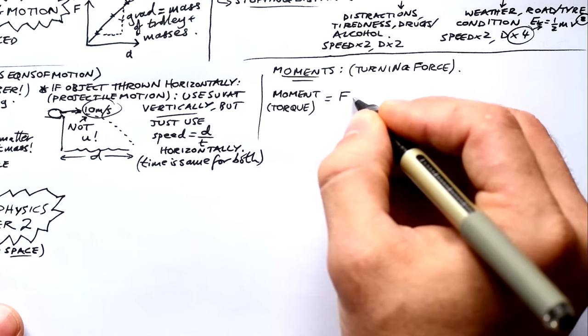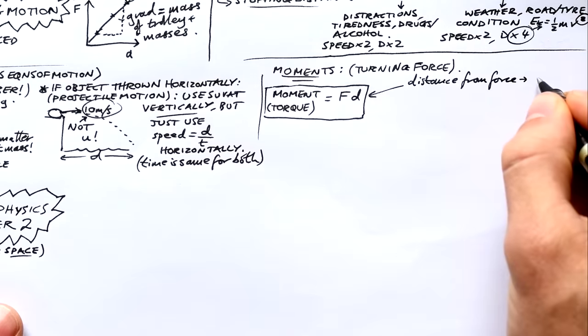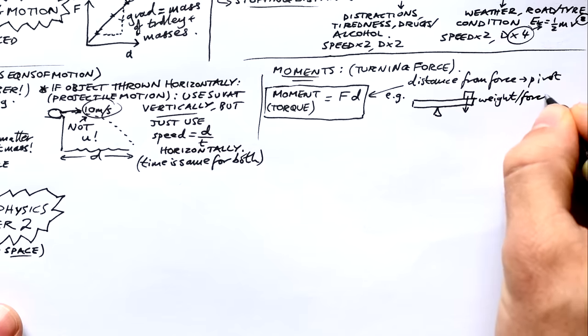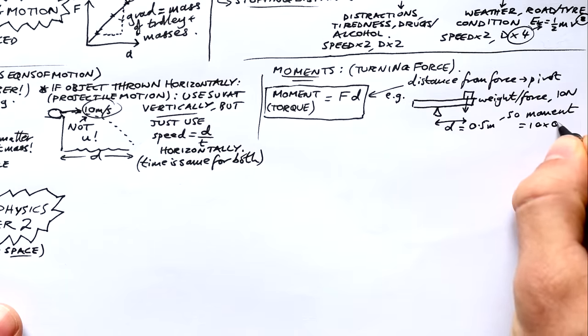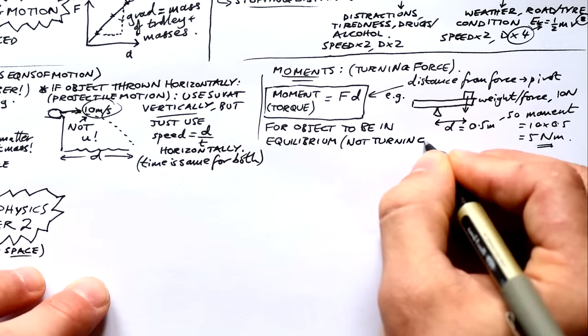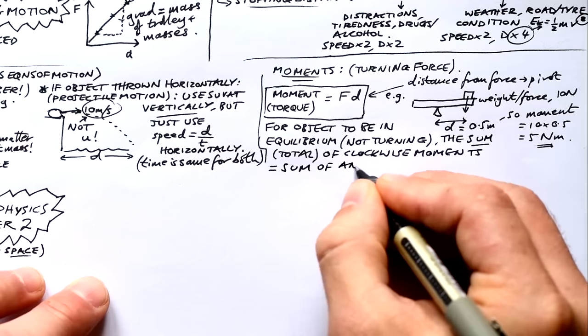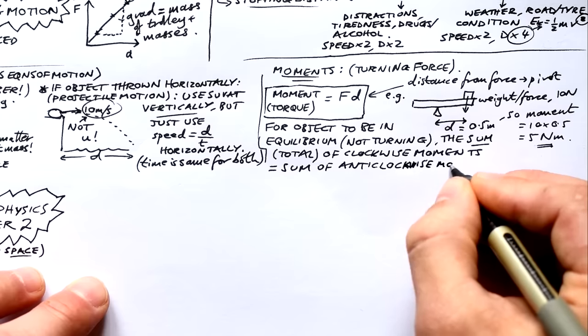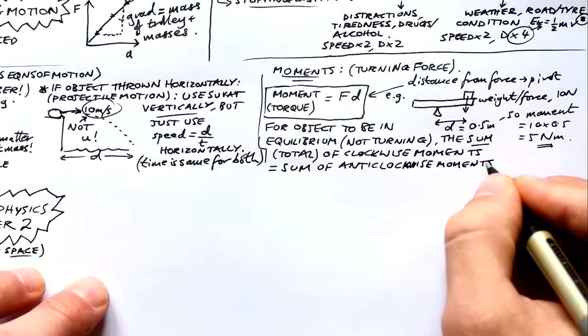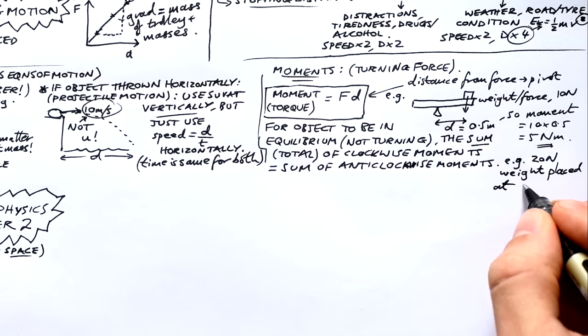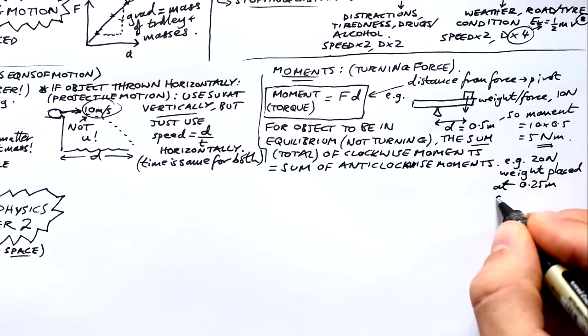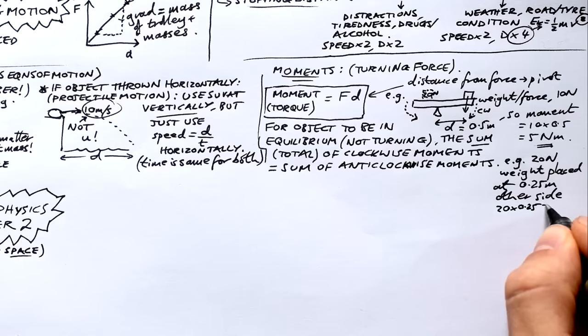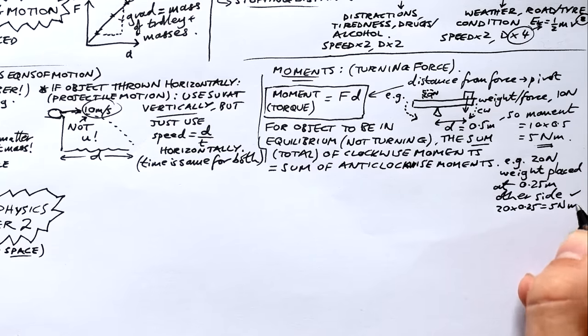Moments are turning forces. A moment, also known as torque, is equal to force times distance. But that distance is distance from the force to the pivot. Here's a seesaw example, pivot in the middle. We have a weight on one end, that's our force of 10 newtons. It's a distance of half a meter from the pivot. So the moment is 10 times 0.5, that's five newton meters. For an object or system like this seesaw to be in equilibrium, that means not turning, the sum of the clockwise moments must equal the sum of the anti-clockwise moments. This weight is a clockwise moment. To balance it, we need a weight on the other side. Let's say I only have a 20 newton weight. Where does it need to be placed? It needs to be placed twice as close to the pivot than the other weight. Because we need its moment to be equal to five newton meters as well. So 20 times 0.25, that gives us five newton meters.